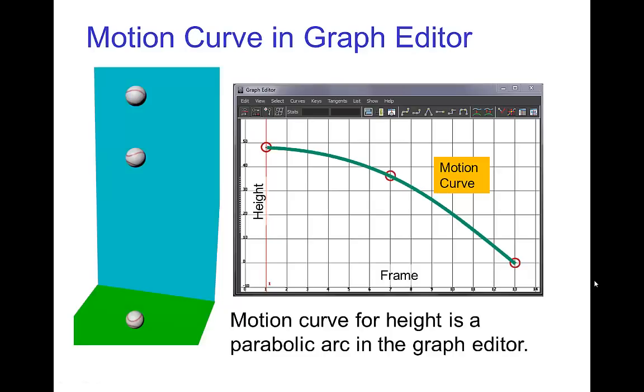Now, another instance where we find a parabolic arc is when we have an object that is falling or rising and falling, then the motion curve in the graph editor is also a parabolic arc.